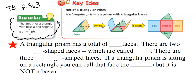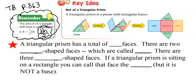This is the key idea from your textbook on page 363. The area of a triangle is base times height divided by 2, because the triangle is half of a rectangle or parallelogram. I usually use B times H divided by 2. Here's a picture of the net, and I like that it's color-coded — the green triangles are the bases.